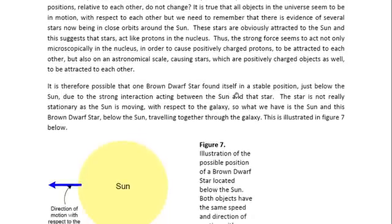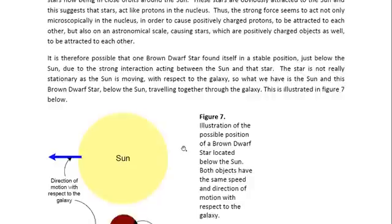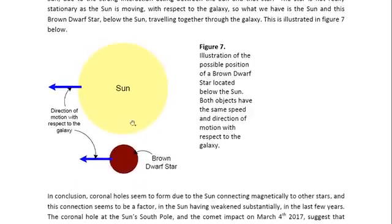It is therefore possible that one brown dwarf star found itself in a stable position just below the Sun, due to the strong interaction acting between the Sun and that star. The star is not really stationary, though, as the Sun is moving with respect to the galaxy. So what we have is the Sun and this brown dwarf star below the Sun traveling together through the galaxy. And this is possibly what it may look like. However, more recent information, actually a photograph taken by Scott Seale, showed that there is an object actually embedded at the Sun's south pole. So this object would actually be closer, and part of it would actually be embedded inside the Sun.